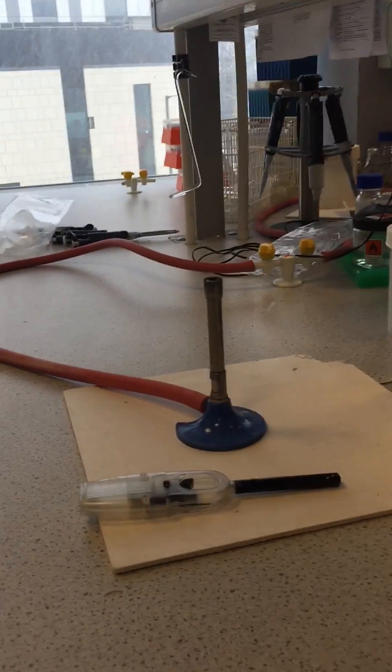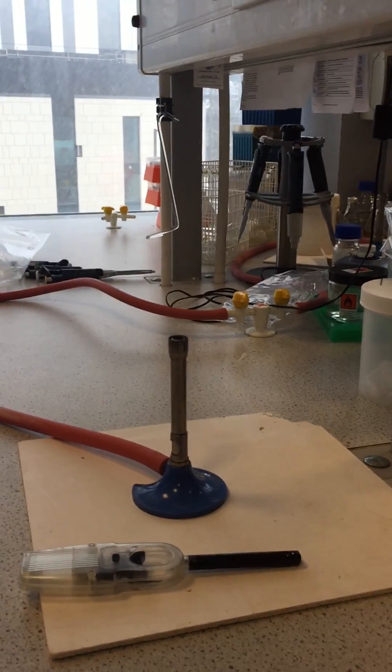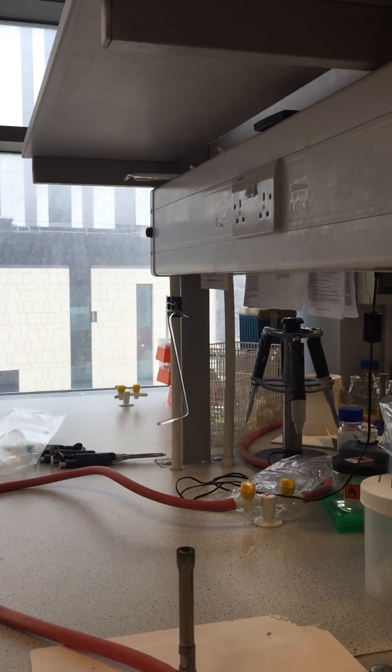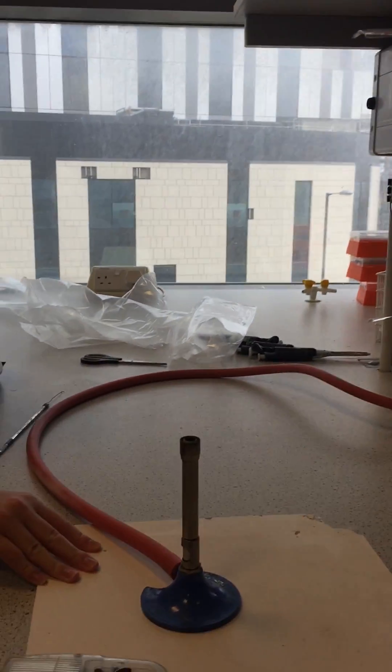A Bunsen burner is a key tool for a microbiologist. Before lighting the Bunsen burner, you need to make sure that it is clear overhead of any obstructions that might catch fire.